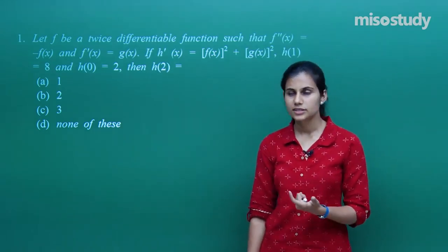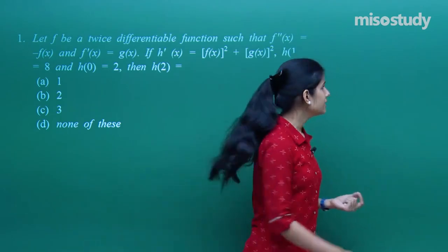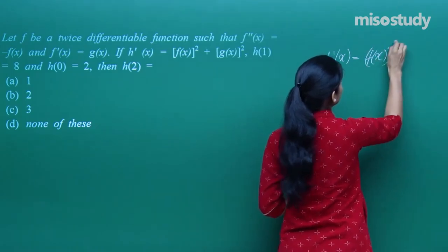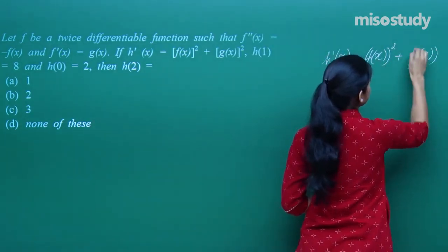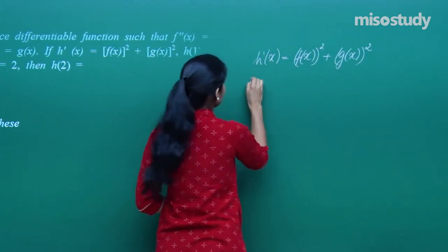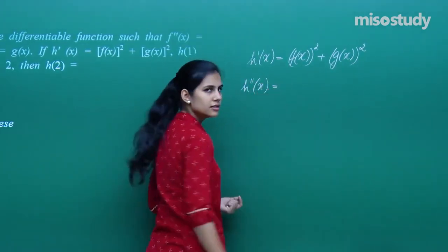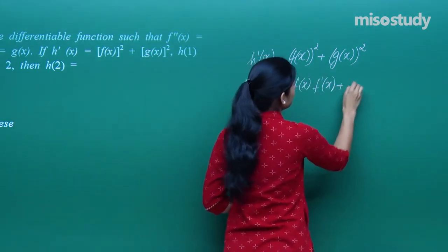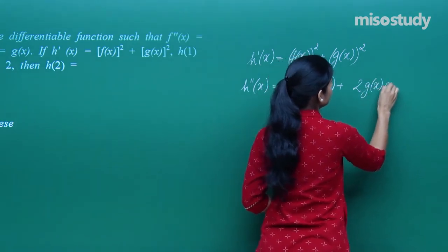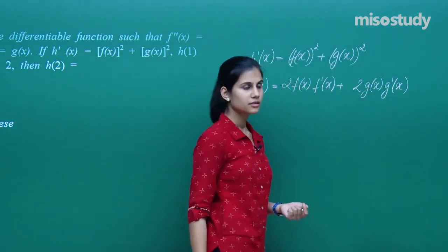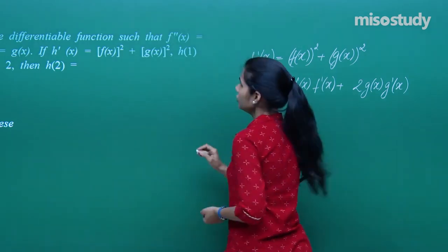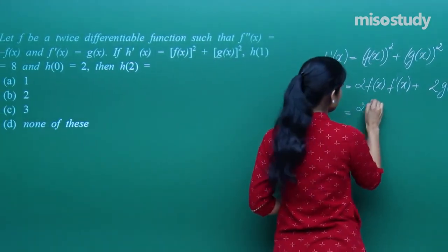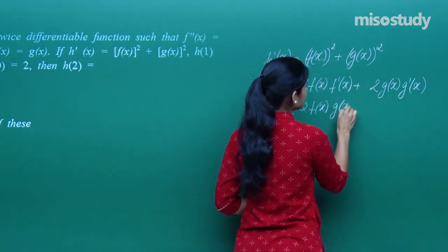We need to compute h(x) first, which is not given directly. h'(x) is given as [f(x)]² + [g(x)]², so what will h''(x) be? It will be 2·f(x)·f'(x) + 2·g(x)·g'(x). Now f'(x) = g(x), so I can replace that: this becomes 2·f(x)·g(x) plus 2·g(x)·g'(x).